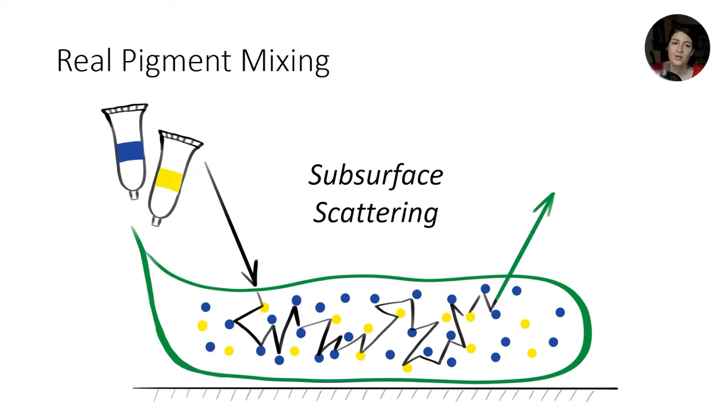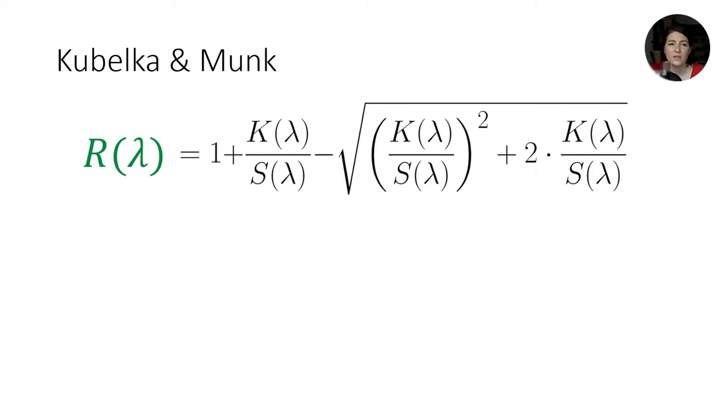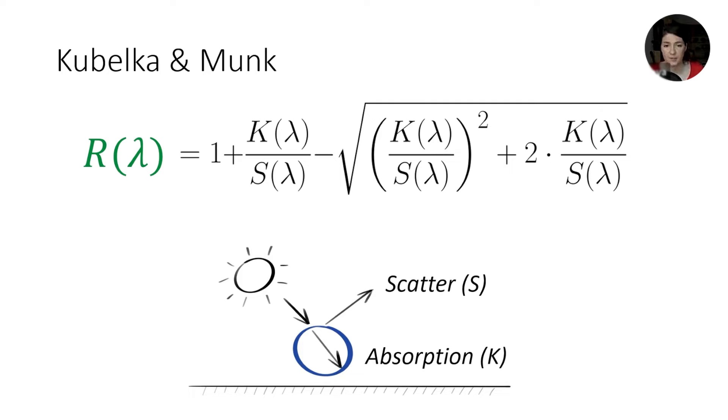Almost a century ago, there was this duo, Pavel Kubelka and Franz Munk, who came up with a closed form solution to all this. The result of subsurface scattering is a reflectance spectrum. It's the color of the material in question. And Kubelka and Munk gave us a diffuse reflectance formula predicting just that. All you need is two spectra measured directly from the pigment, its absorption and scatter, which is the K and S coefficients in the equation.